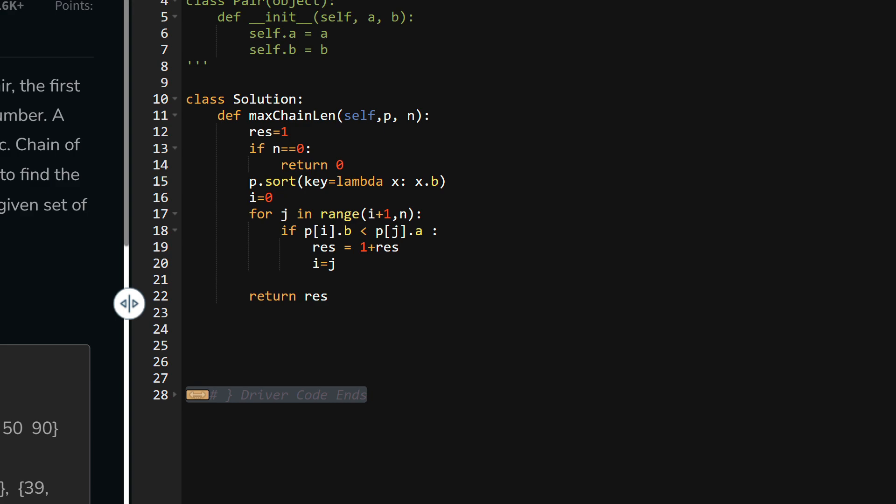Now we are inside the coding part of the max length chain question. As you can see, we have updated the initial value as one. In the presentation, we took it as a count variable, but in this coding example, we're taking it as res. If N equals zero, return zero. This means if there is no element mentioned inside the example, then we will return zero. Next part is p.sort. We're sorting the array here by the B object. This is the object given in the question. We'll sort the list of P using the B object.